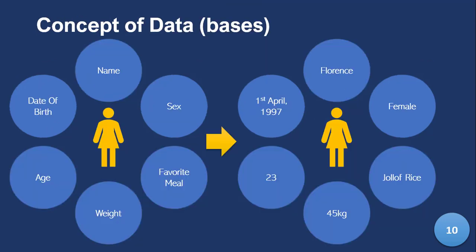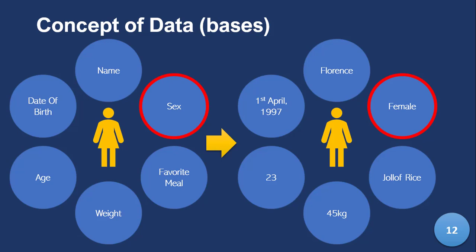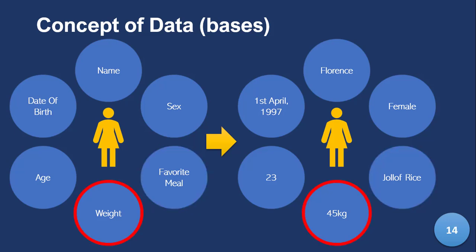Let's look at this lady again — the first entity we looked at. Her name is Florence, her sex is female, her favorite meal is jollof rice — whether Nigerian jollof rice or Ghanaian jollof rice, if you know you know — her weight is 45 kg, age is 23, and date of birth is 1997. These are all the attributes of this entity called Florence.